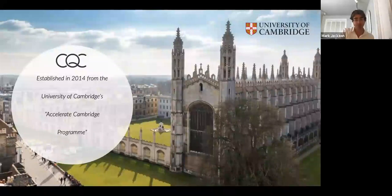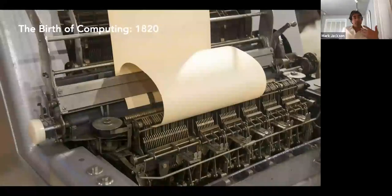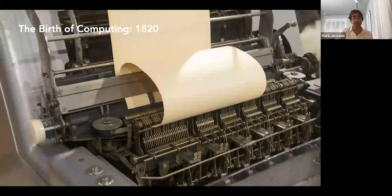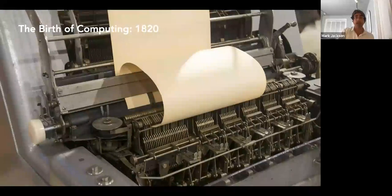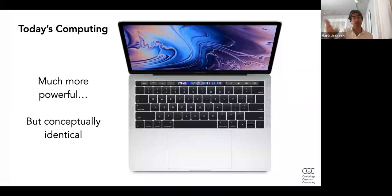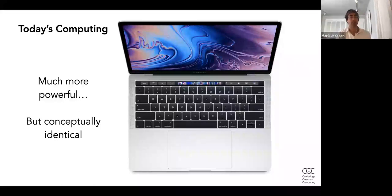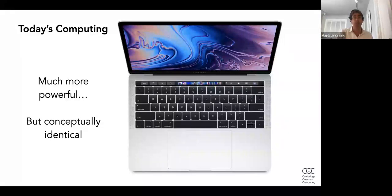The birth of computing was actually about 200 years ago almost exactly. This was Babbage's Difference Engine — a mechanical computational device. Even though it looks very different from what we'd call a computer, all the basic ingredients are there. In 200 years we've made enormous progress in what we call a computer, and this is more in line with what most of you would call a computer nowadays — in fact, this is exactly what I'm using to give this presentation right now.